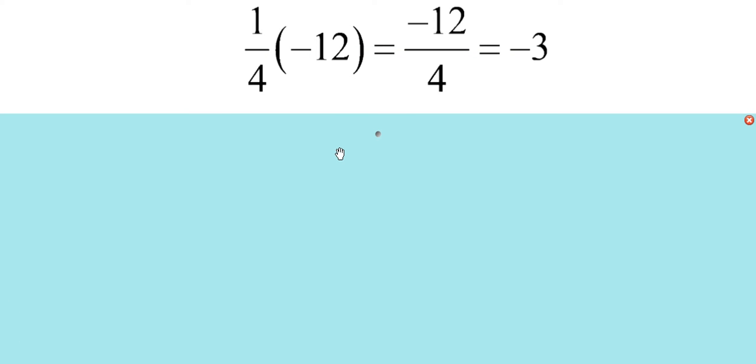1 fourth times negative 12 is negative 12 divided by 4, which is negative 3.